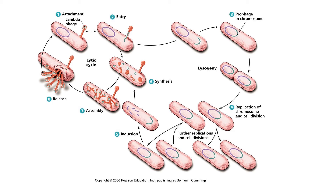The first two steps — attachment and entry — are the same as we covered in lytic viral replication. Lambda and E. coli would randomly collide into each other. Lambda would know this is the right host cell by binding to a receptor on E. coli, and then lysozyme would be produced and the lambda DNA would be injected into the E. coli.